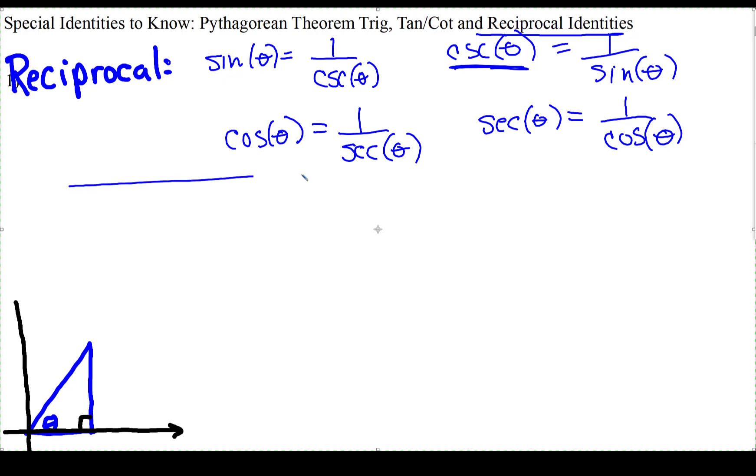And then the next two, there's a couple variations. Tangent theta is 1 over cotangent, and cotangent theta is 1 over tangent.